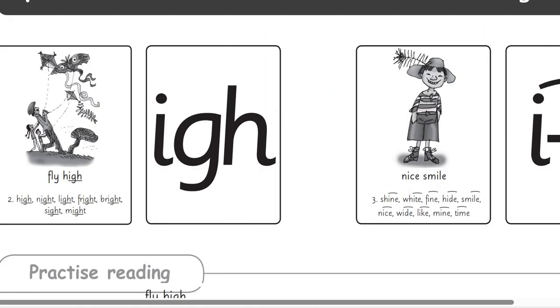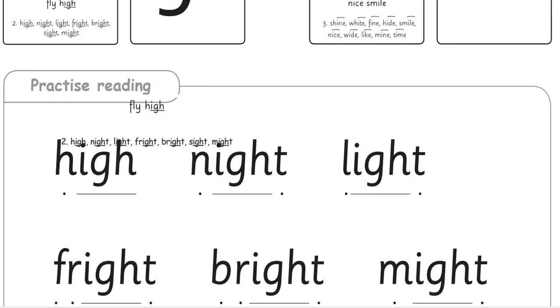Now, let's do the word for I. High. Night. Light. Fright. Bright. Might. Light.